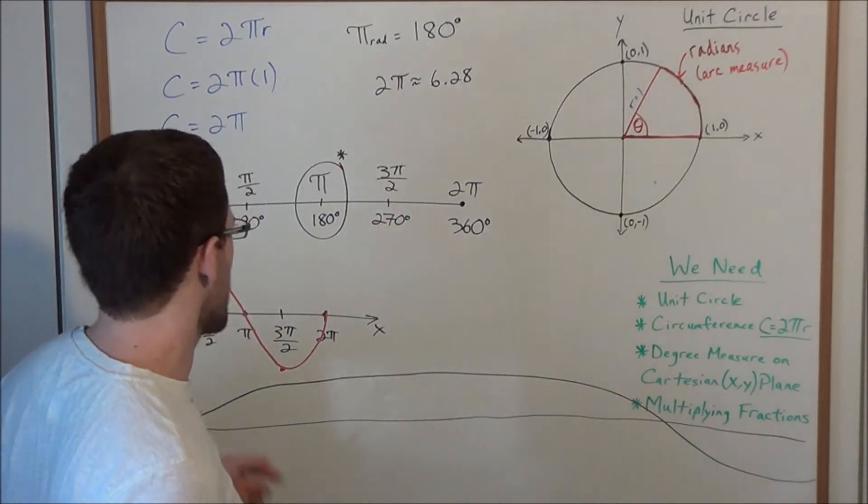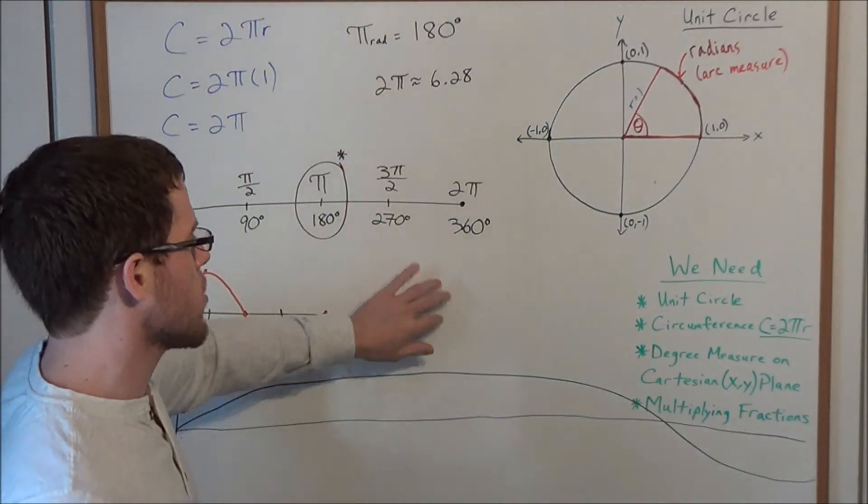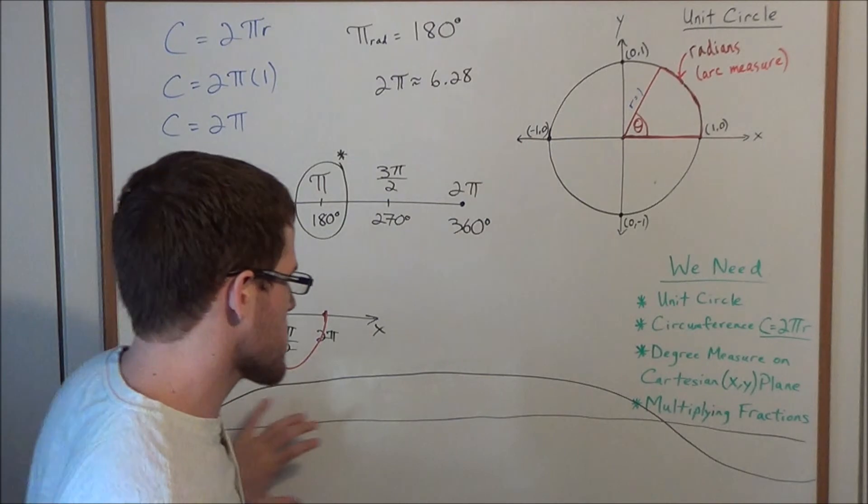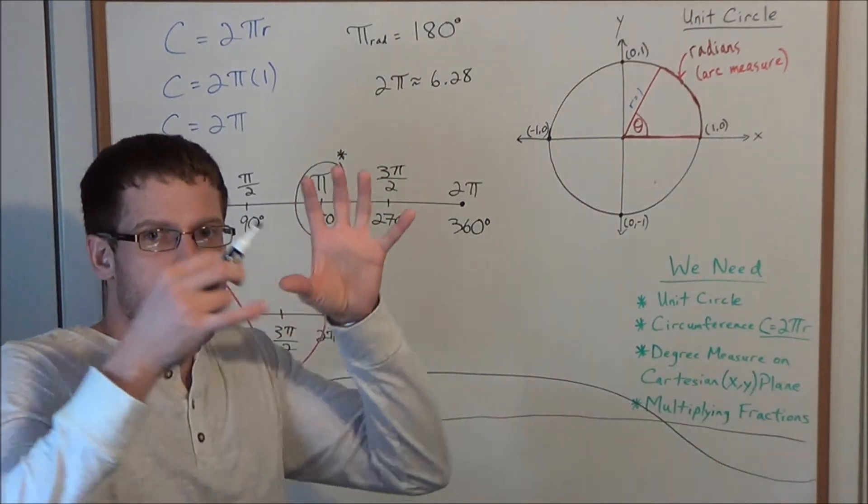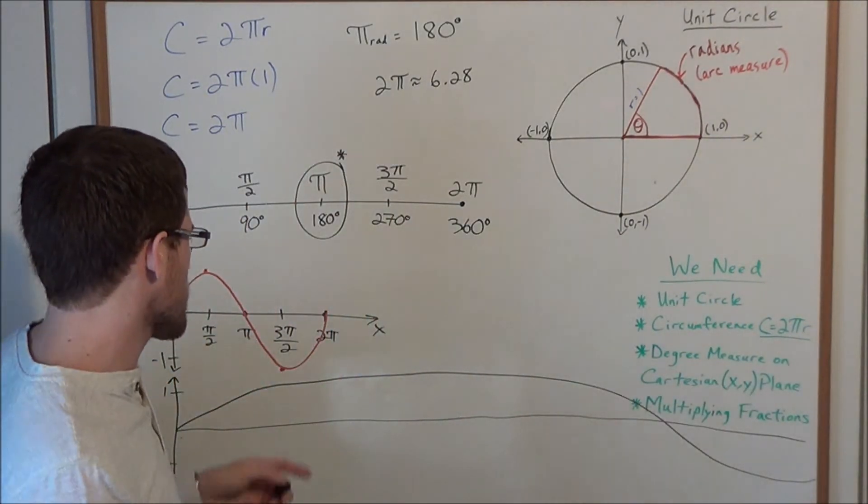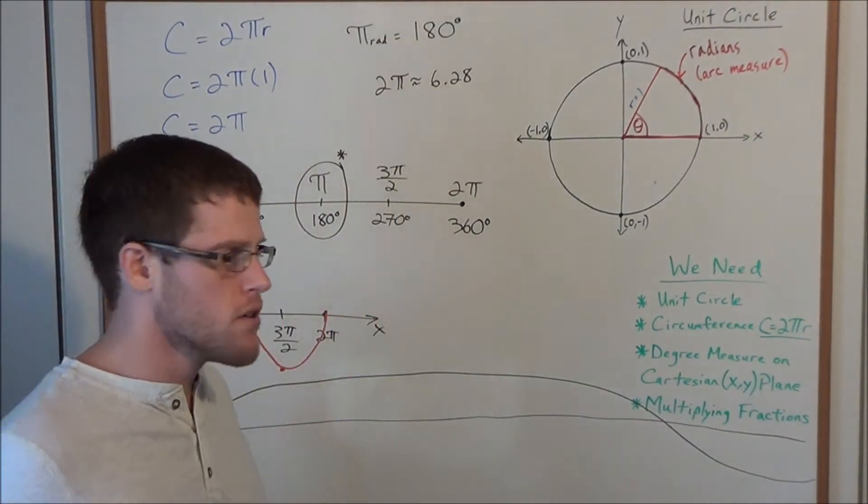If you ever graph a function on your calculator and you're not in radian mode, you won't even be able to see it on the page. You'd have to really stretch your page out to negative 360 to 360. So in terms of graphing the functions, radians is the way to go.